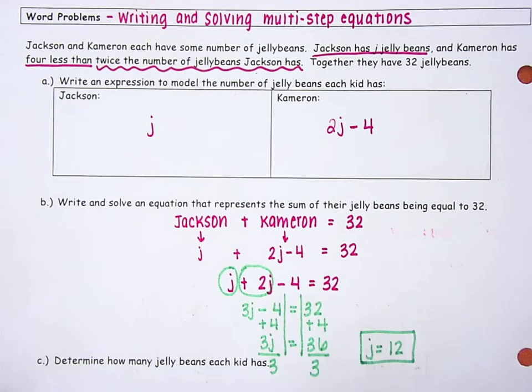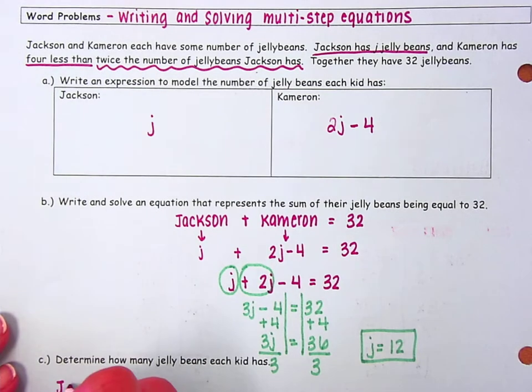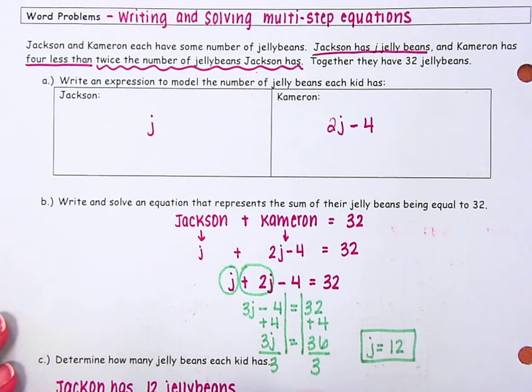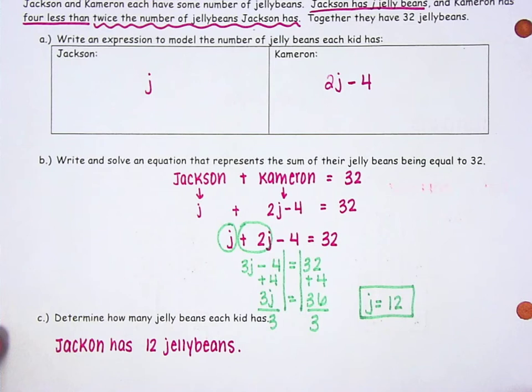Now we have to think about how many jelly beans each of these kids have. What does J equals 12 really mean? Well we know that Jackson has J jelly beans. So if J is equal to 12, that means that Jackson has 12 jelly beans.